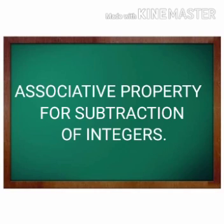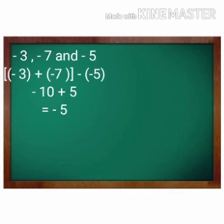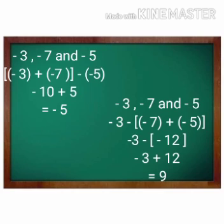Now let us check the associative property for subtraction of integers. Let us use the same values: minus 3, minus 7, and minus 5. Take minus 3 plus minus 7 as one group and subtract minus 5. That gives us minus 10 plus 5 is equal to minus 5. Now let us group them differently and subtract. Minus 3 minus (minus 7 plus minus 5) gives us minus 3 minus (minus 12), which becomes minus 3 plus 12, which is equal to 9.